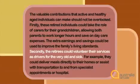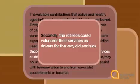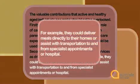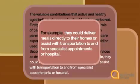What linking word should follow 'firstly'? Secondly, the retirees could volunteer their services as drivers for the very old and sick. To further develop the supporting ideas, the writer provides an example. For example, they could deliver meals directly to their homes or assist with transportation to and from specialist appointments or hospital. This sentence is called a developing sentence.